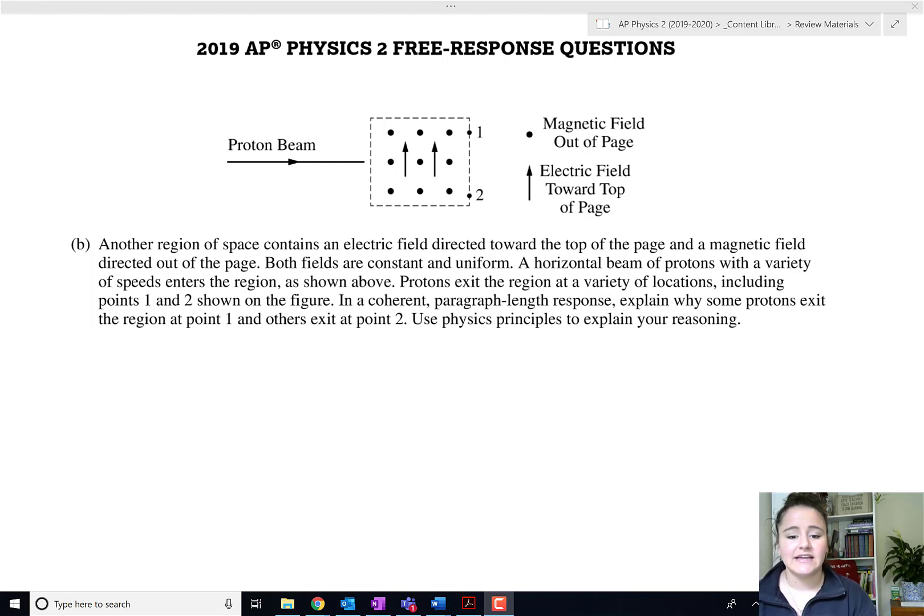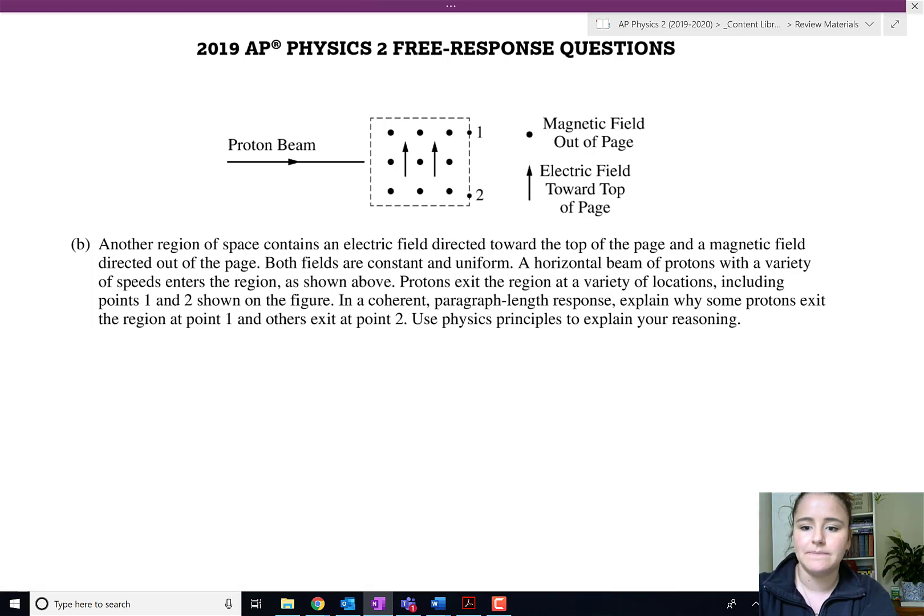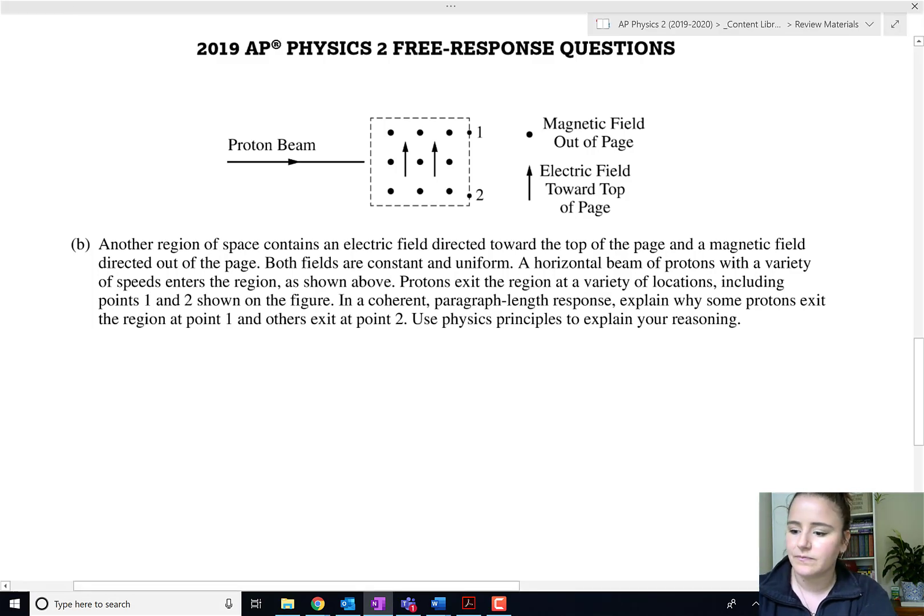Here we have part B, a paragraph length response. It says another region of space contains an electric field directed toward the top and a magnetic field directed out of the page. Both fields are constant and uniform. Horizontal beam of protons with a variety of speeds, that's going to be important here, that they are at a variety of speeds.